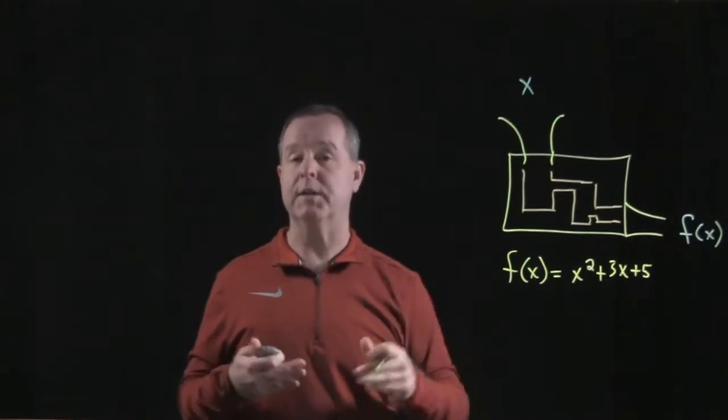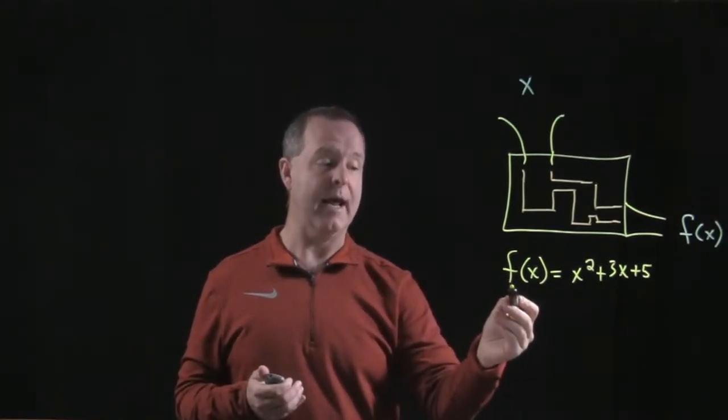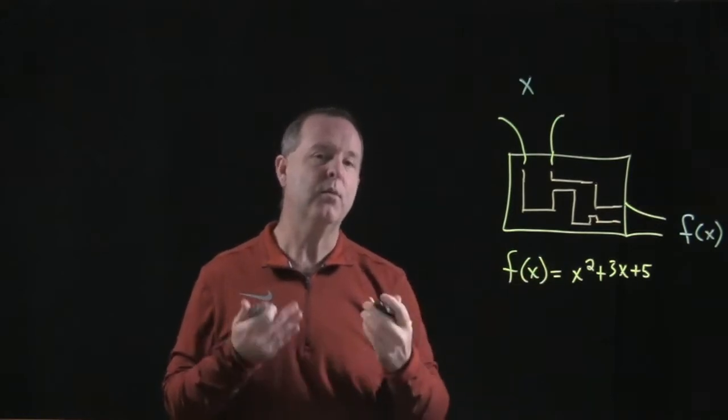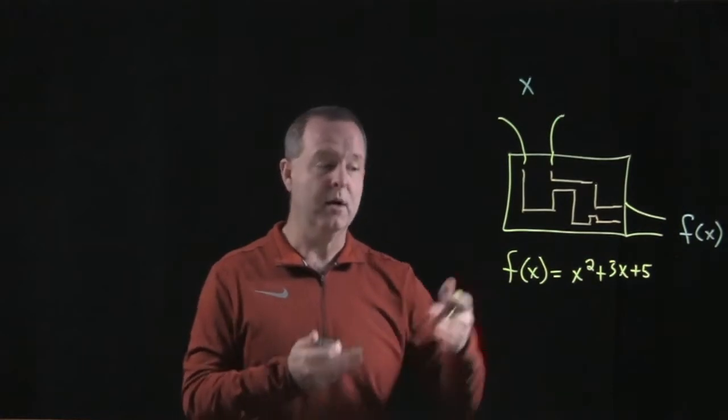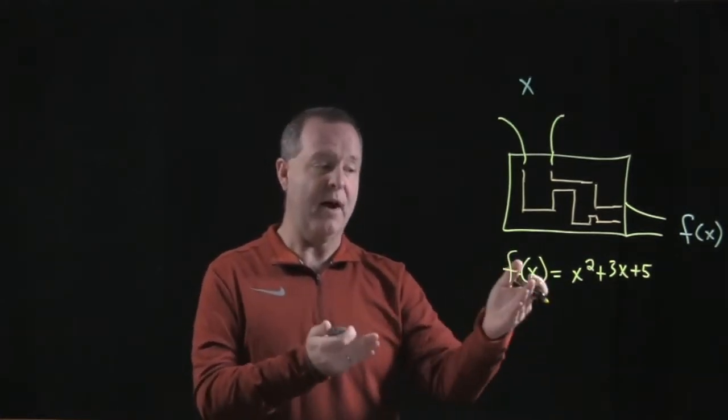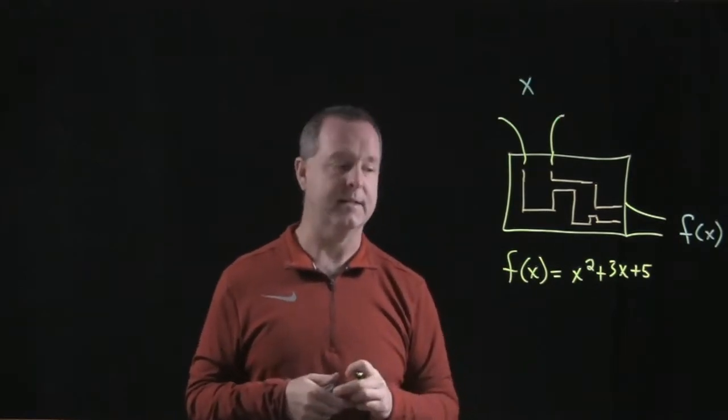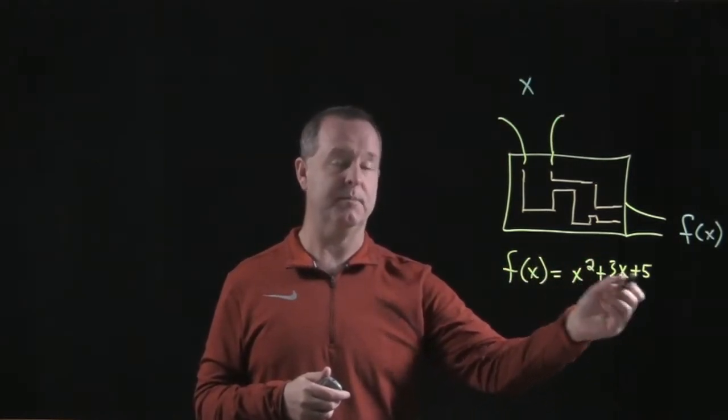So I have a function listed right here. And how we read this function where it says f, parentheses, x, parentheses, we read that as f of x, the function evaluated with the variables inside. So this is an f function evaluated with x as its independent variable. And this particular function is x squared plus 3x plus 5.